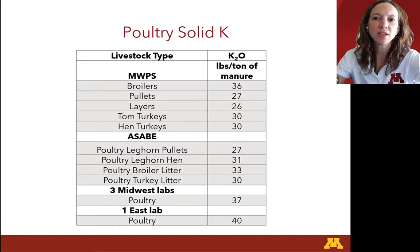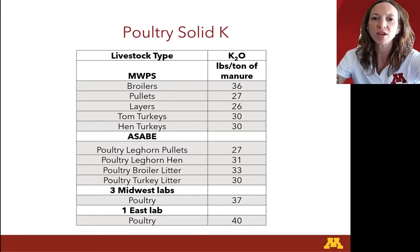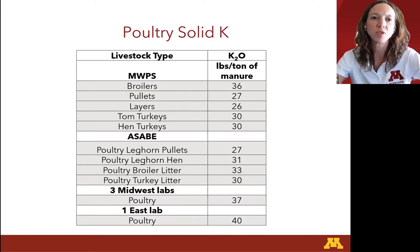For poultry solid potassium, Midwest Plant Service ranged between 26 and 36 pounds of K2O per ton of manure, and ASABE had between 27 and 33. Our medians were 37 for the three Midwestern labs and 40 for the Eastern U.S. lab — both higher than those published book values.